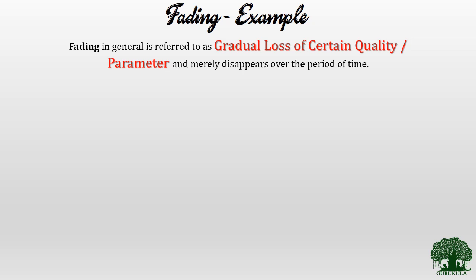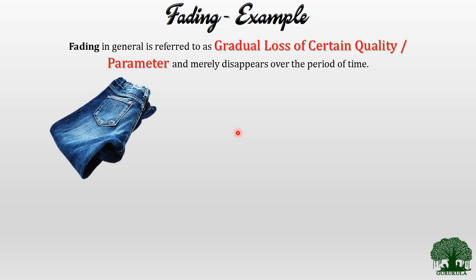Now let us come to a very important term: fading. Before getting into the technical context, let us see fading with some real-time examples from our day-to-day life. Generally, fading refers to the gradual loss of a certain quantity or parameter, which slowly disappears over a period of time.